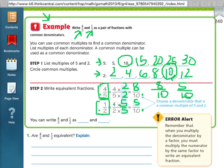So I rewrote four fifths and one half as a pair of fractions with common denominators. Now they both have ten on the bottom. So I can write four fifths and one half as eight tenths and five tenths. Okay, so that's the first part of the lesson. They give you two fractions and they say write them with common denominators.